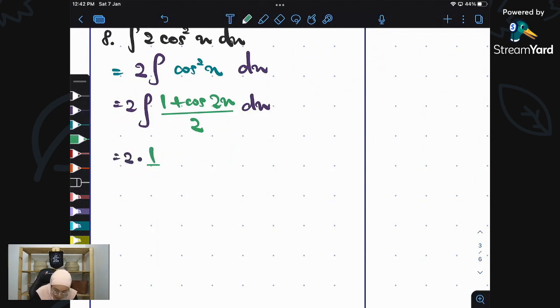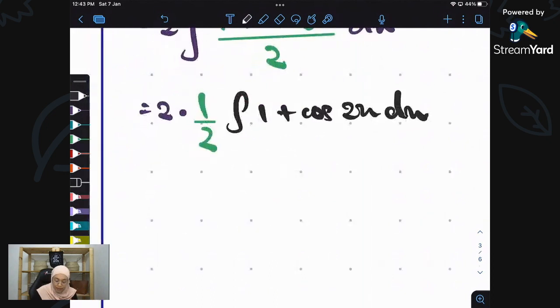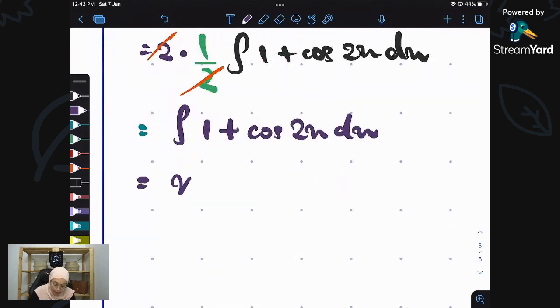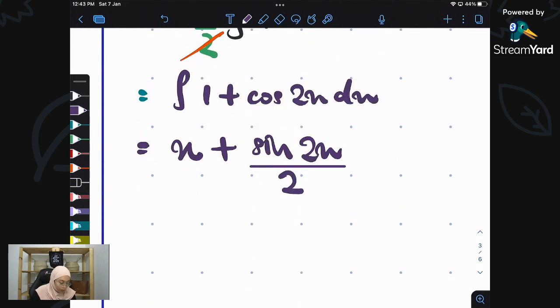I bring the 1 over 2 outside and it becomes 1 instead. So now I should write here as 1 plus cos 2X dx. We can cut-cut, leaving 1. So the rest is only integrate 1 plus cos 2X dx. And eventually the answer is X plus sin 2X divided by 2, then plus C. And then the answer is just that.